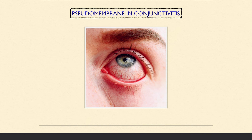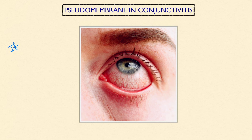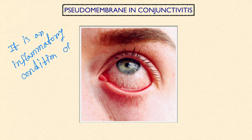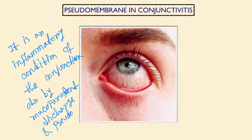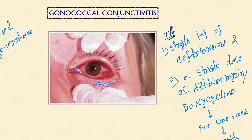Next is the formation of pseudomembrane in conjunctivitis. This is an inflammatory condition of the conjunctiva characterized by mucopurulent discharge and pseudomembrane formation. Treatment is the same as normal conjunctivitis.